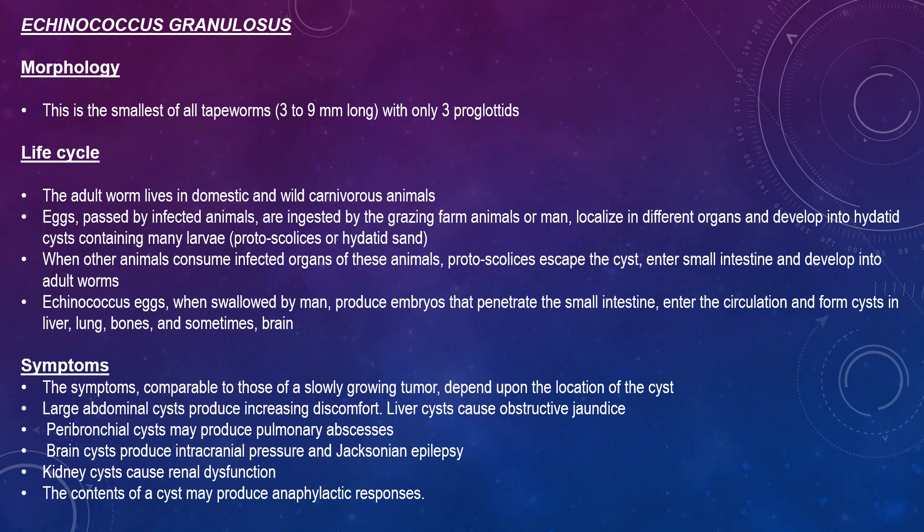The morphology: this is the smallest of all the tapeworms, 3 to 9 mm long with only 3 proglottids. For the life cycle, the adult worm lives in domestic and wild carnivorous animals. Eggs passed by the infected animals are ingested by grazing farm animals or man, which localise in different organs and develop into hydatid cysts containing many larvae.